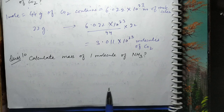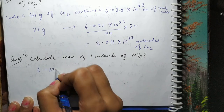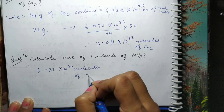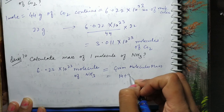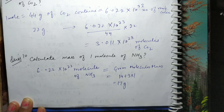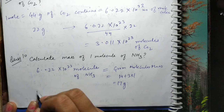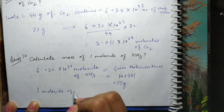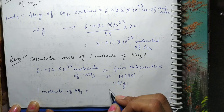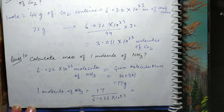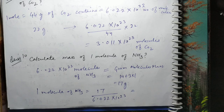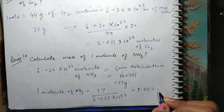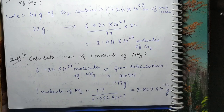Next: calculate mass of one molecule of ammonia. Avogadro's number of molecules of ammonia = gram molecular mass = 14 + 3×1 = 17 gram. Itne molecules 17 gram ke barabar hain, to one molecule of ammonia = 17 ÷ Avogadro's number = 2.823×10⁻²³ gram.